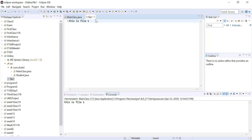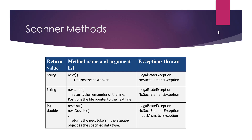We can use all the Scanner methods we used before when reading from the console. The next method returns the next token — from the current reader location until the next whitespace. nextLine reads from the current location until the end of the line. nextInt reads the next integer at that location. If we do not have an integer value there, that will throw an InputMismatchException. If we try to read a line and there is no line — we've reached the end of the file or the file is empty — that will cause a NoSuchElementException.